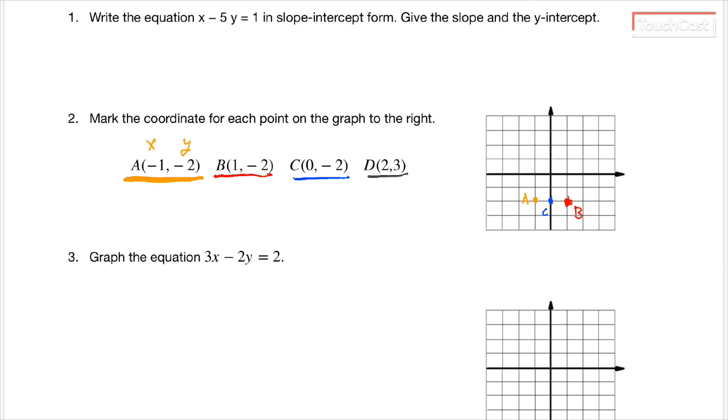So that's up two from the origin. One, two. And then over three. One, two, three. And we know to go to the right because it's a positive three.